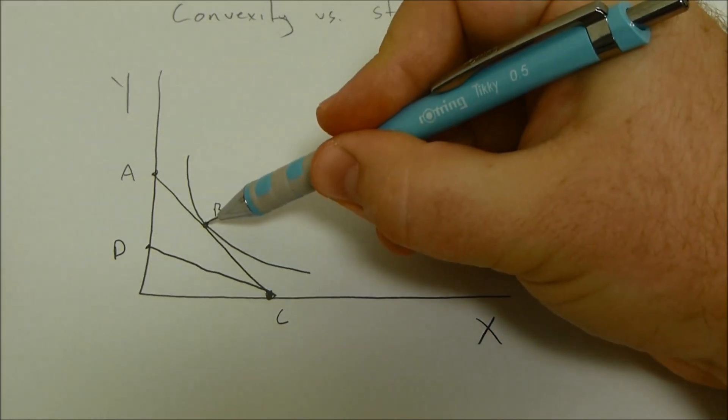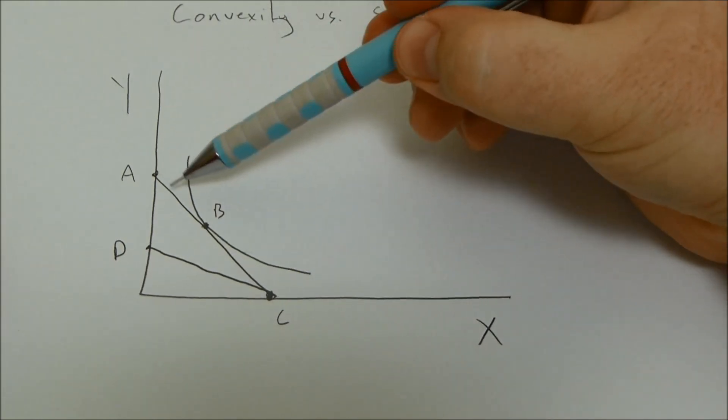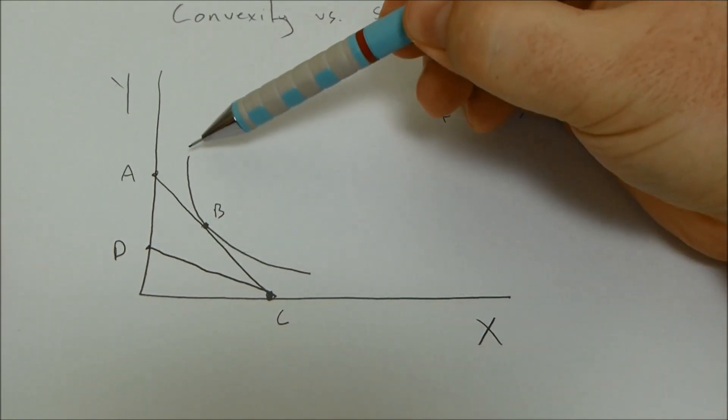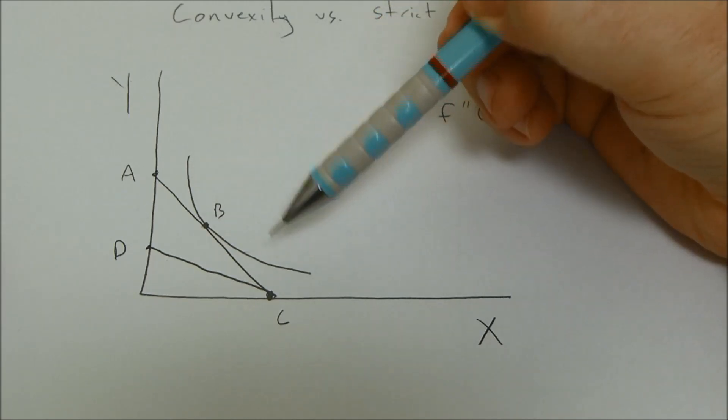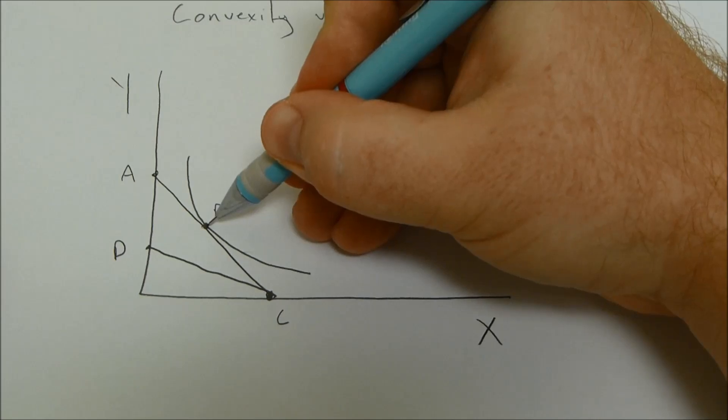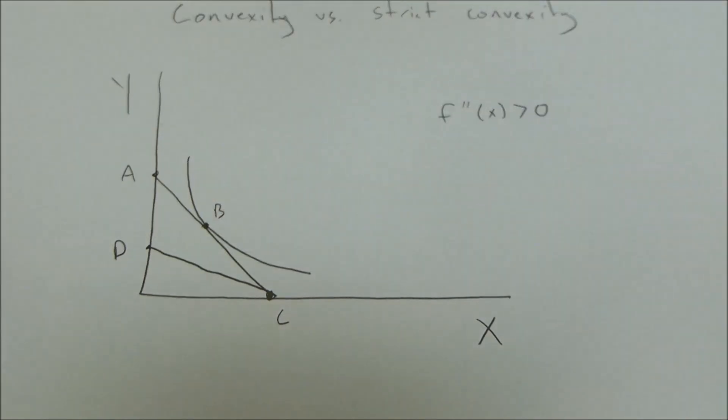We can see an example here of a tangency point with a linear budget constraint line, a strictly convex curve here, our indifference curve, and where they're tangent, the slopes are the same. They just barely touch each other.